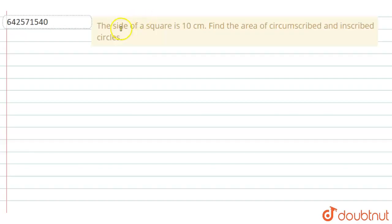The question says that the side of a square is 10 cm. Find the area of circumscribed and inscribed circles.